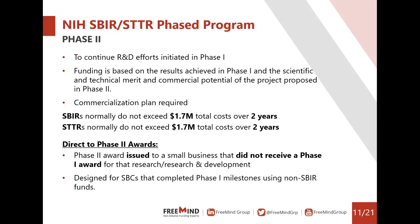There is also the option for direct-to-phase-two awards, which many clients take advantage of. This is a phase two award issued to small businesses that did not receive a phase one SBIR award for that specific research. It's designed for small businesses that completed phase one milestones using non-SBIR funds — so if you weren't funded by an SBIR phase one in the past, that doesn't mean you can't go directly to a phase two award.